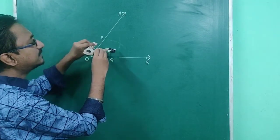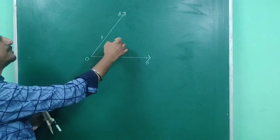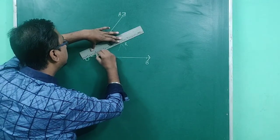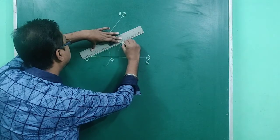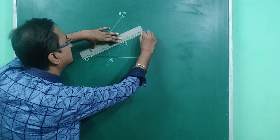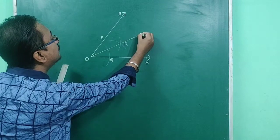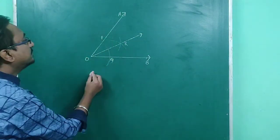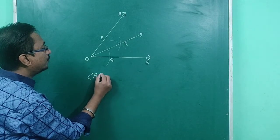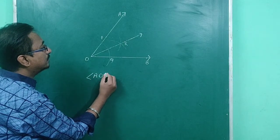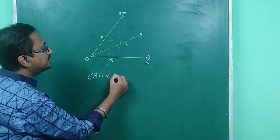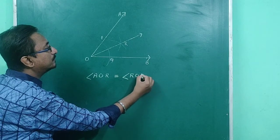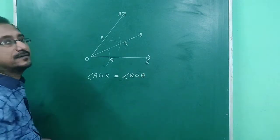Now I am joining points O and R, and this is the required bisector. That means angle AOR is equal to angle ROB. Understood?